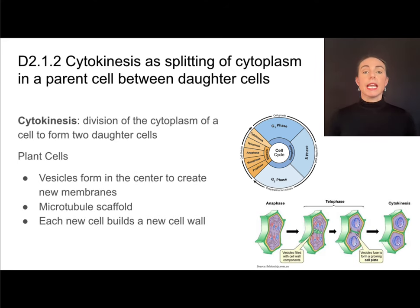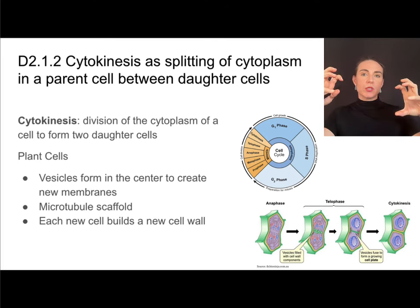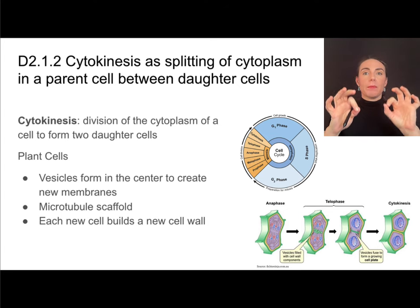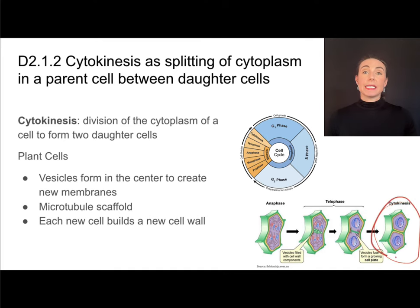In plant cells, cytokinesis involves building a new cell wall between the two daughter cells. First we'll have a new cell membrane, and that will come through the fusing of vesicles. Vesicles will form in the center between where the two daughter cells will split and that will create the new cell membranes. Plant cells also have cell walls, so we need to create that too, and that will happen with a microtubule scaffold. Each new cell is going to build their own new cell wall — you may see that referred to as a cell plate. That eventually leads to two entirely separate daughter cells.